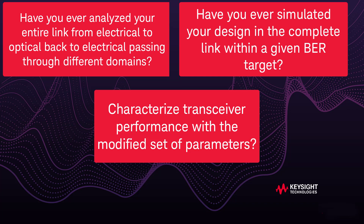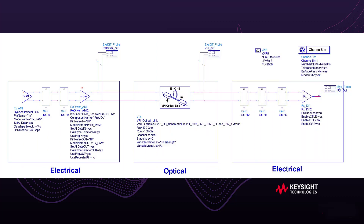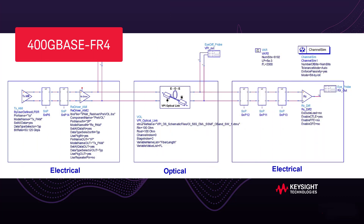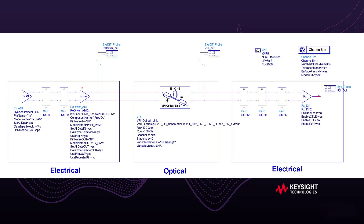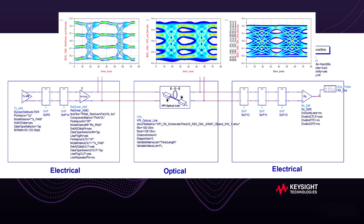If you haven't, you will find out how to do these in this video. Let me show you the examples to these questions based on the 400G FR4 EOE system shown here. To the first question: yes, you can simulate the entire link that contains the mixed domain channels.